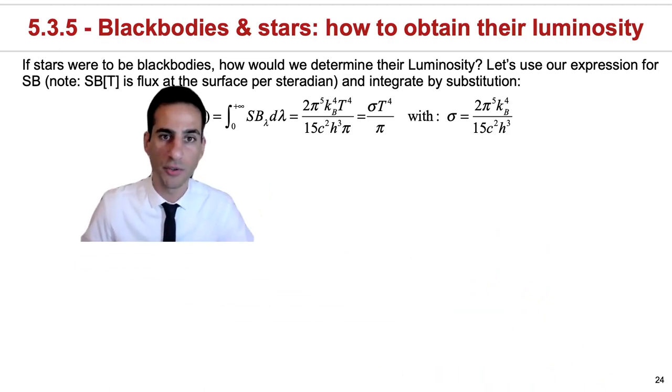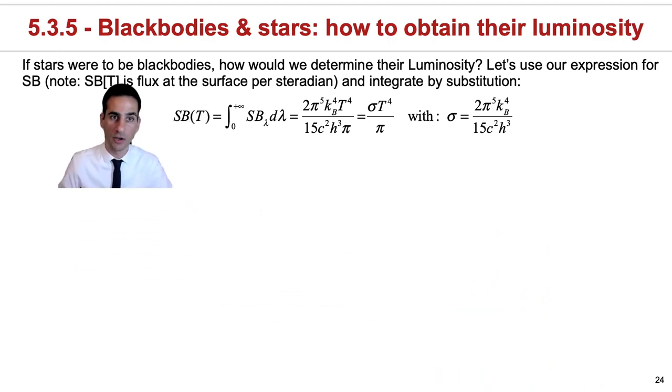First thing you should do is to write down Planck's law, which I'm writing here as SB for surface brightness. Remember that this is a flux density per steradian, and this is important so that we understand why we're integrating and what kind of thing we get out after integrating.